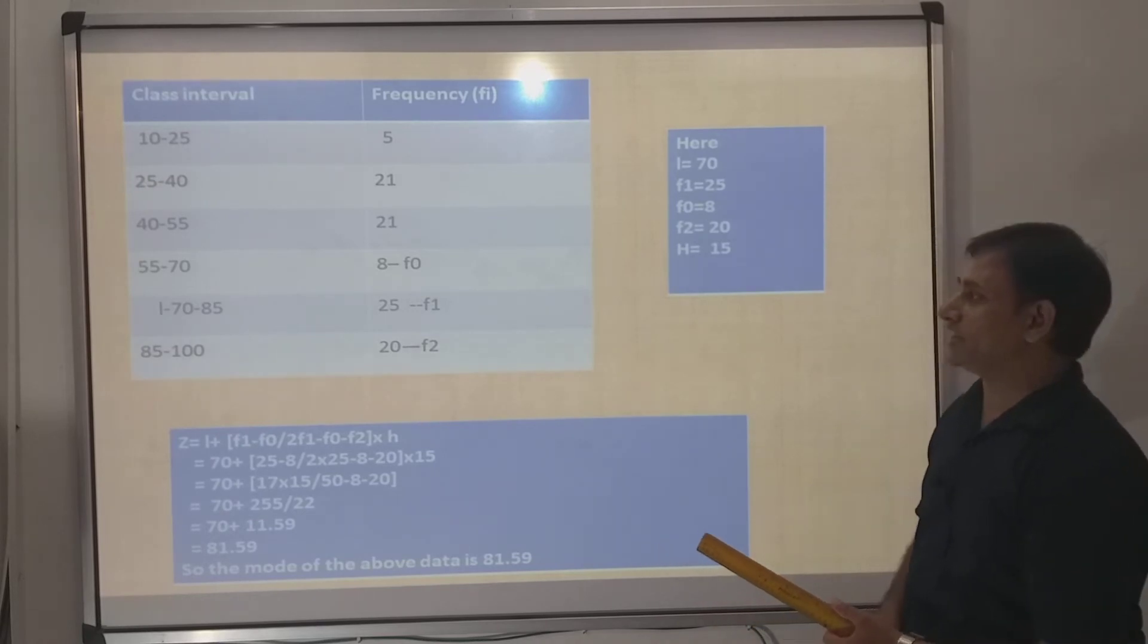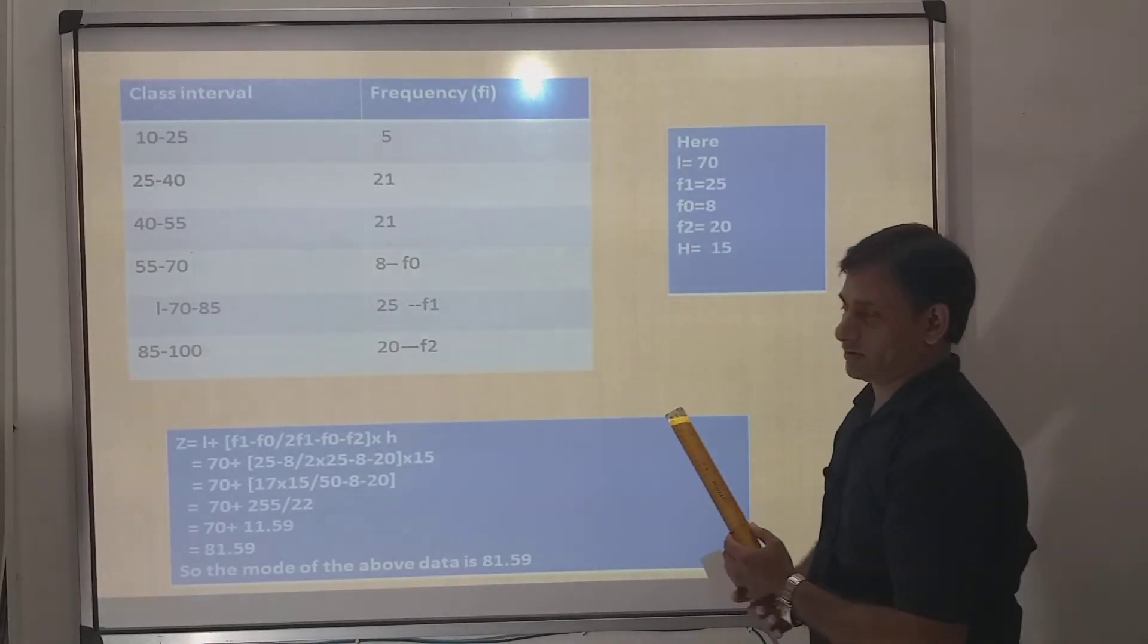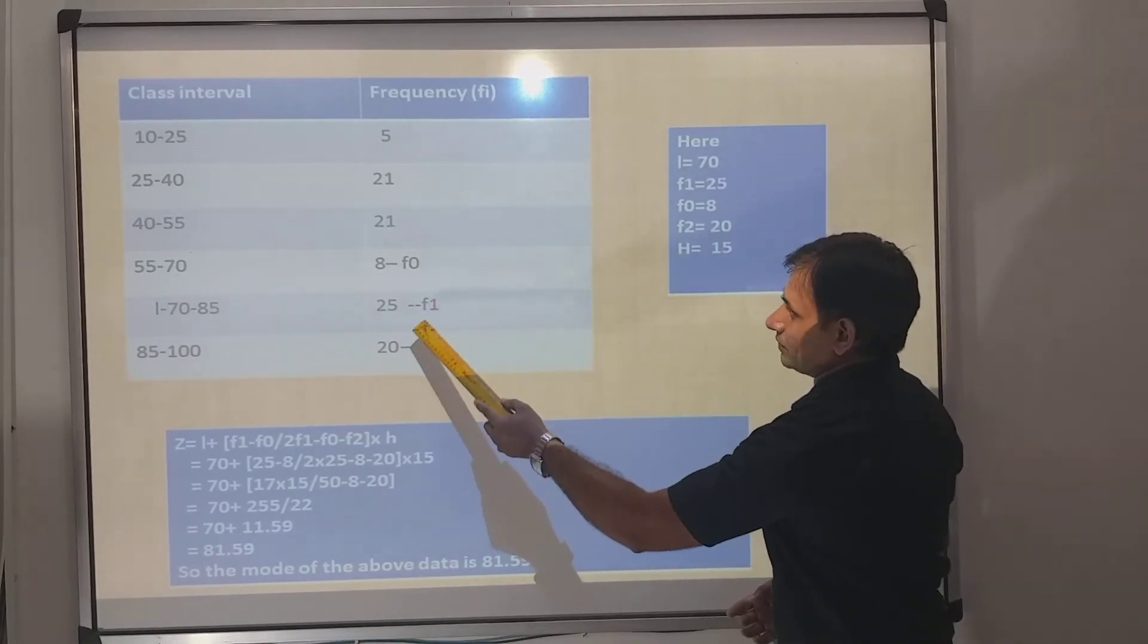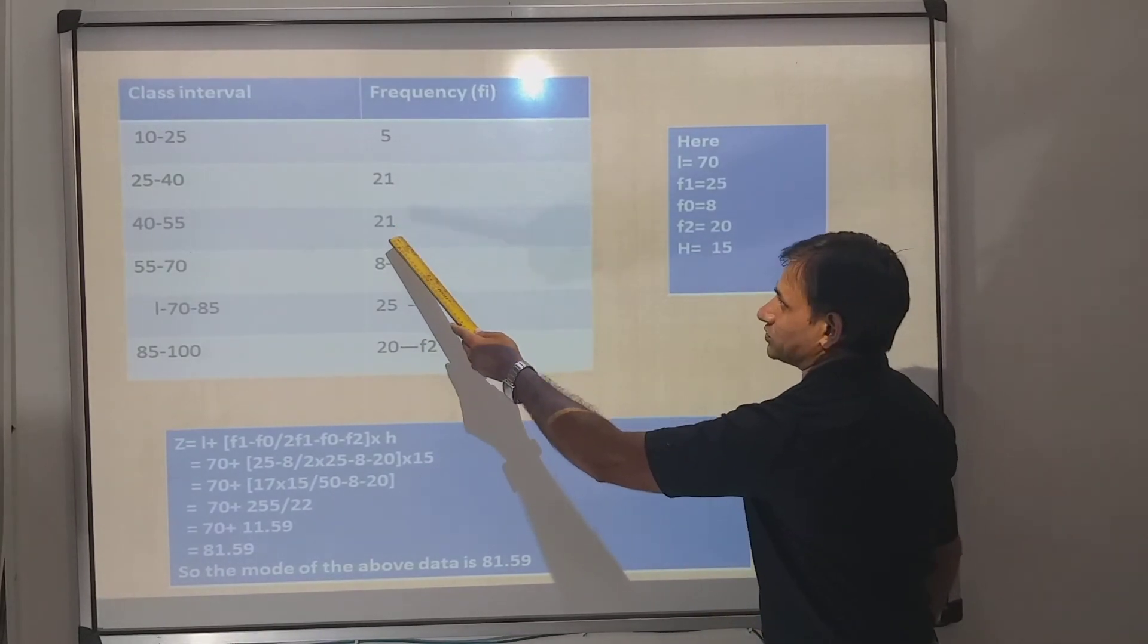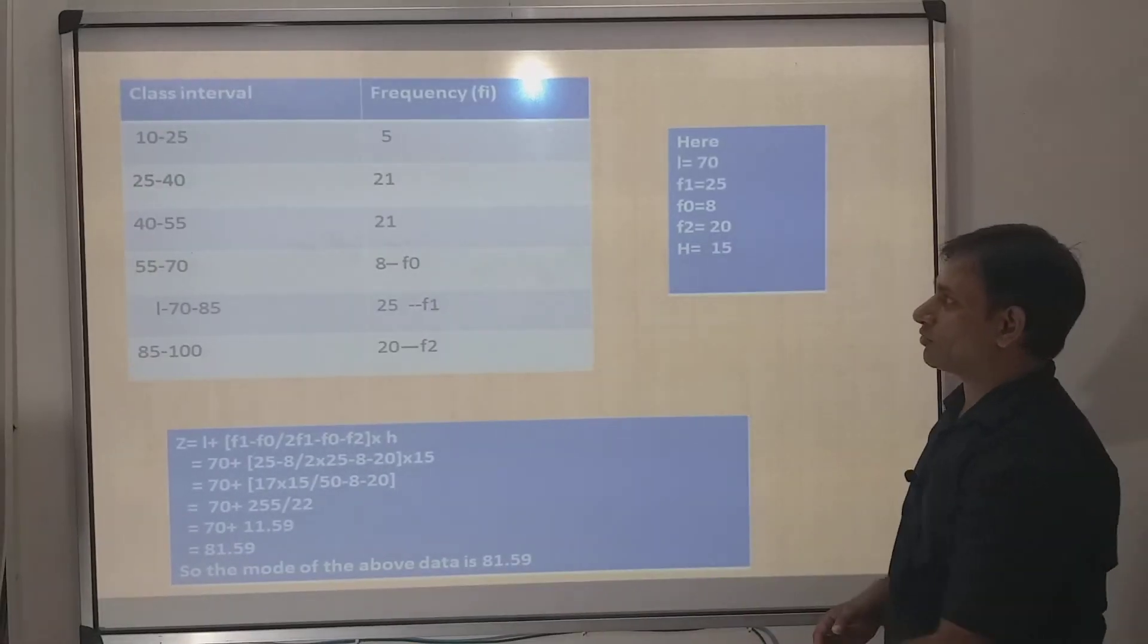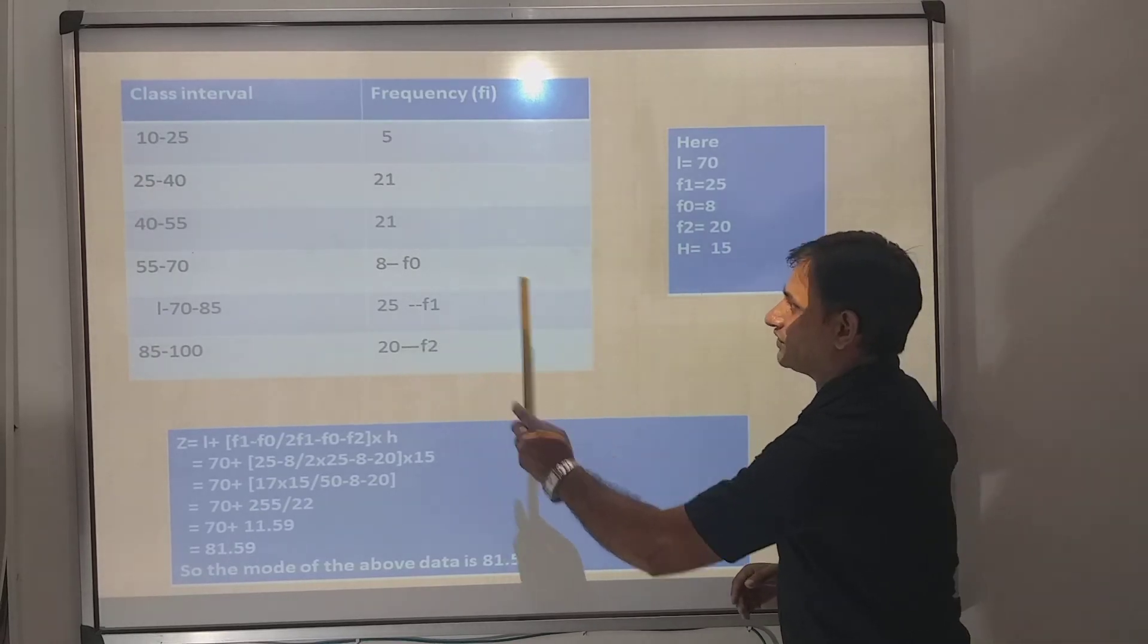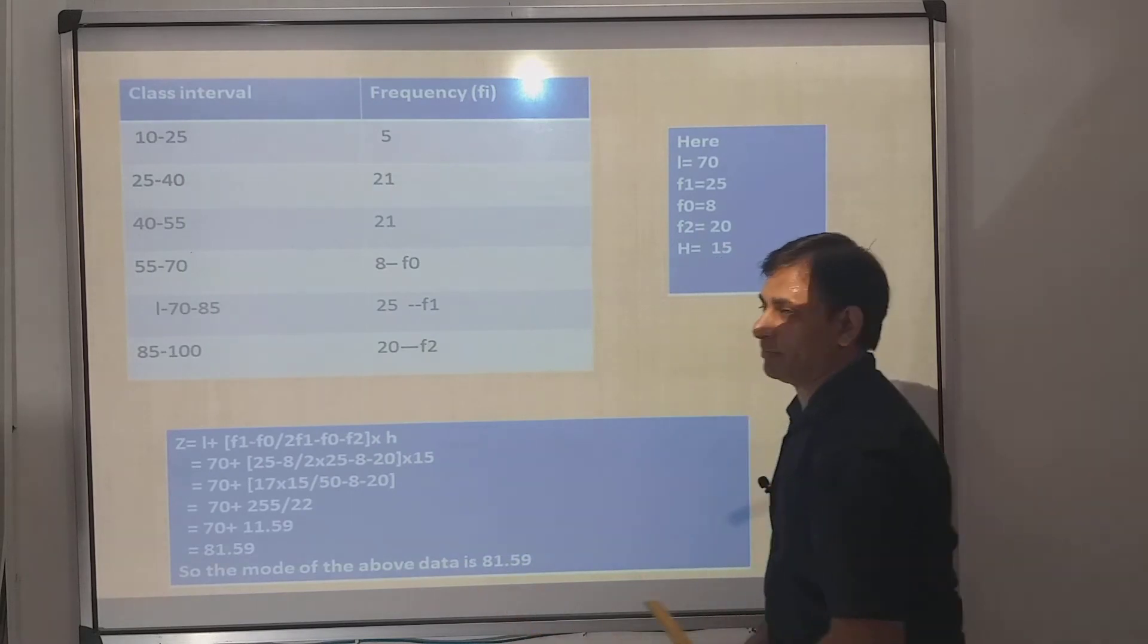Class interval and frequency are given here, students. We do not want to do anything else. We'll make a table of it. Which frequency is more? 5 is there, 21 is there, 8, 25 is more, or 20. You don't have to see repeating, just where the highest frequency is. 25 is more, so 25 is your f1.